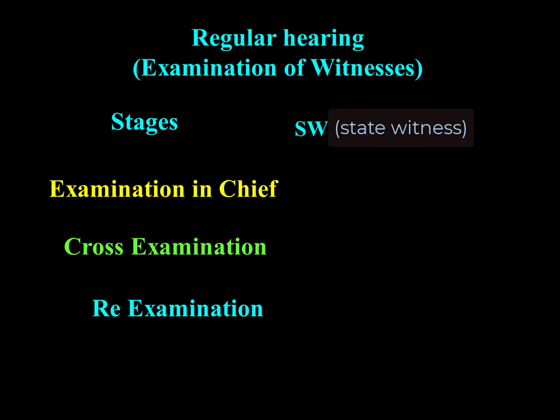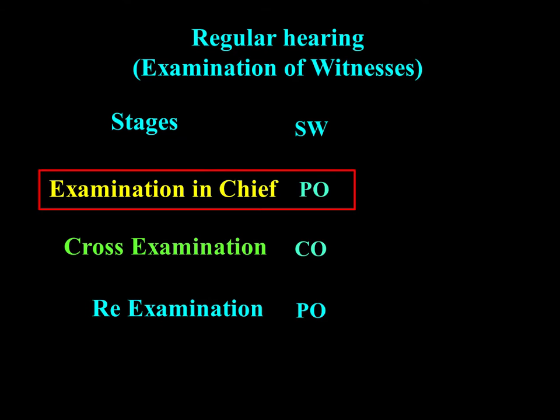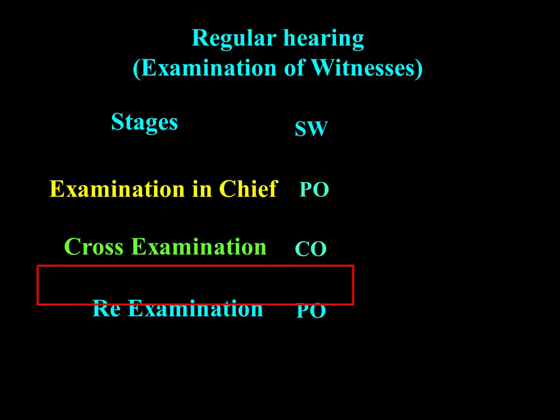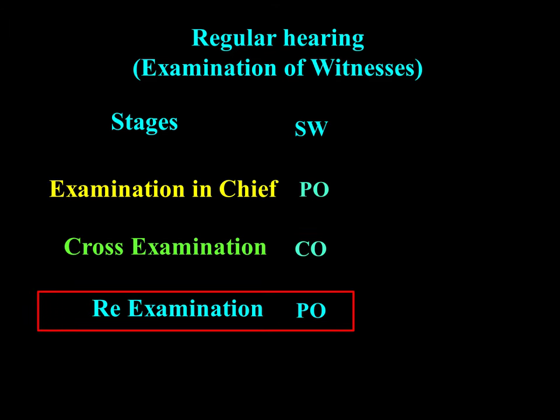After the documents are taken on record, the examination of the witness on behalf of the discipline authority is taken up first. Each witness passes through three stages in his examination. These three stages are: examination in chief, cross-examination, and re-examination. Examination in chief is done by the party which has called the witness, cross-examination is done by the opposite party, and re-examination is again done by the party which called the witness.